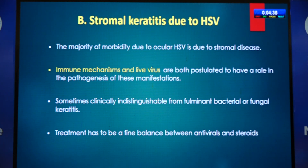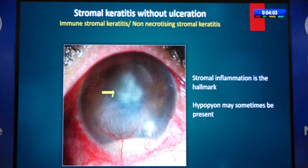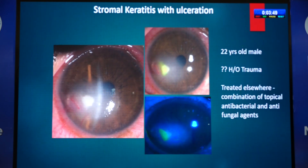Treatment of HSV stromal keratitis requires a fine balance between antivirals and steroids. A classic case: hypopyon is not very common but not rare in HSV stromal keratitis. The hallmark is stromal inflammation without an epithelial defect — previously known as non-necrotizing stromal keratitis. A clue that a case may be viral: the area of edema extending well beyond the area of infiltrate suggests a significant endothelitis component alongside stromal keratitis.